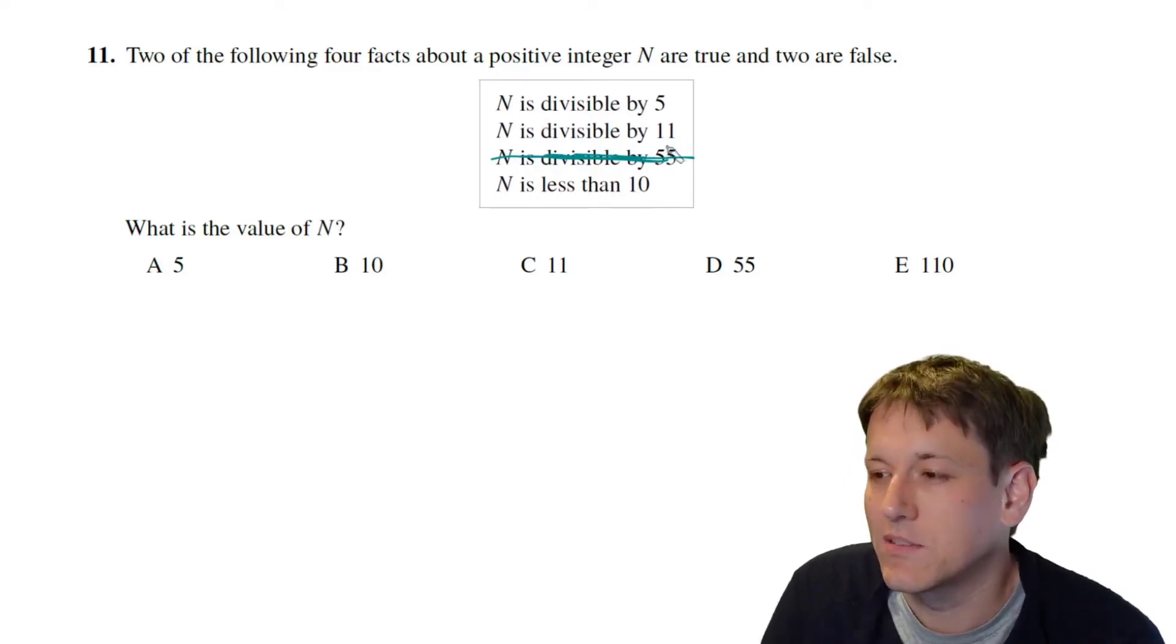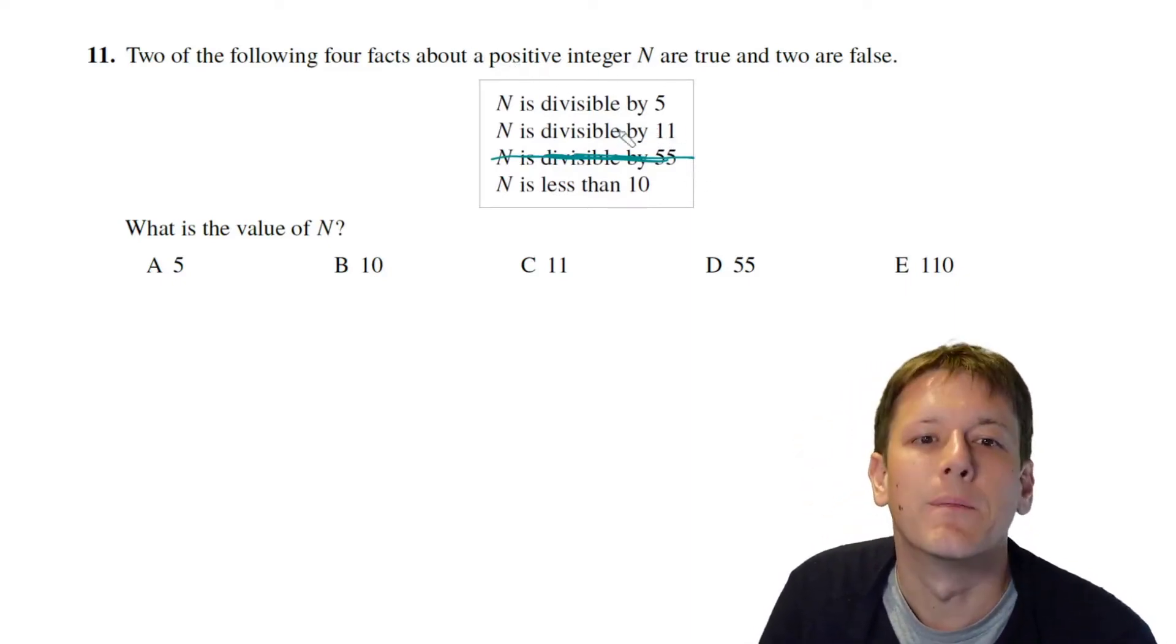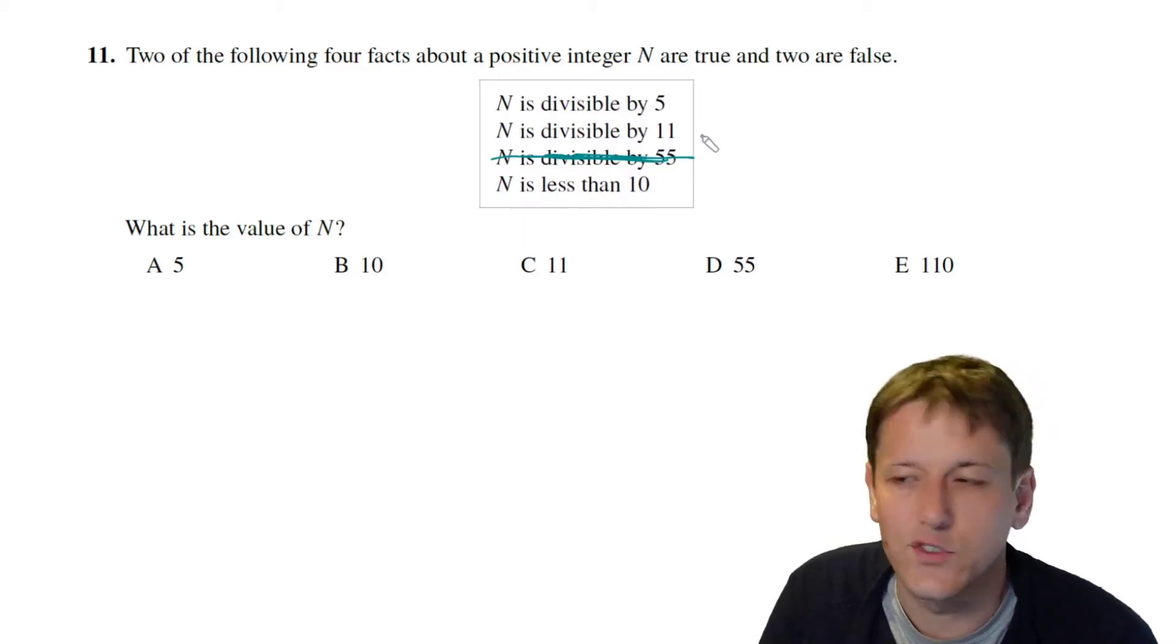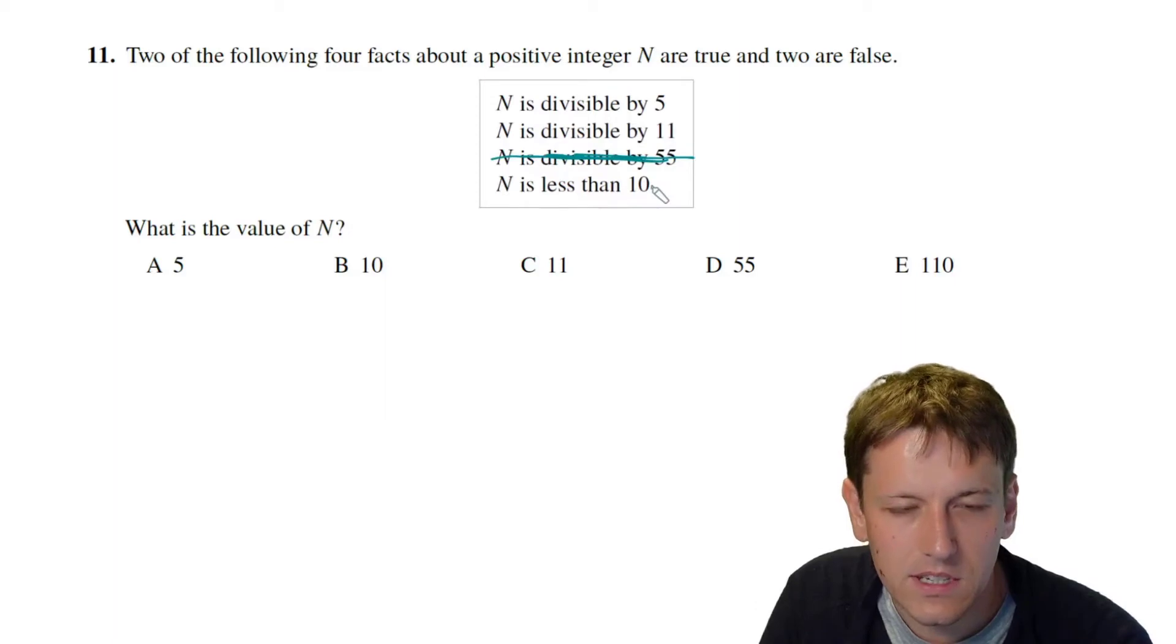So we can rule that one out and then we can look at the other options and say well if it's divisible by 11 it's going to have to be at least 11. You don't have to think about whether zero is allowed here because it's going to be a positive integer and so it can't be less than 10.